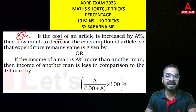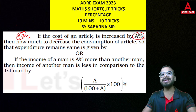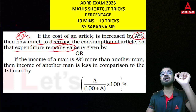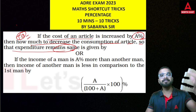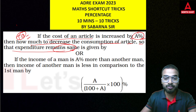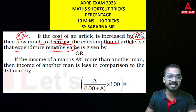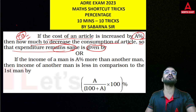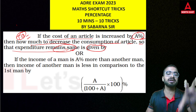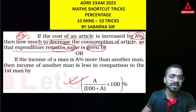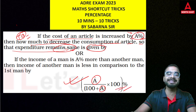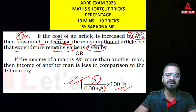What is the cost of an article? How much to decrease the consumption of the articles so that the expenditure remains the same? The expenditure is the cost of an article, but consumption will be reduced. How much to decrease the consumption? A maximum amount will be reduced. So definitely you should use a shortcut. You will get 100% to solve it. This type of question is very important, so please use a shortcut.